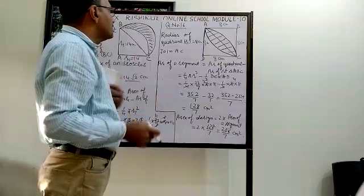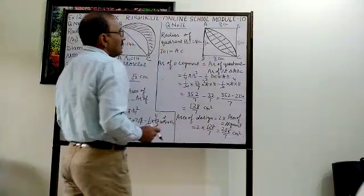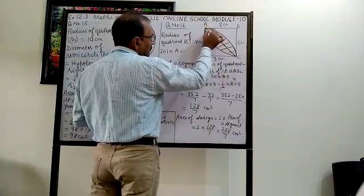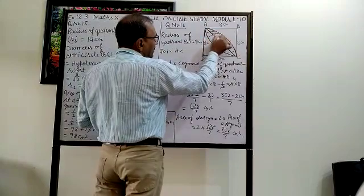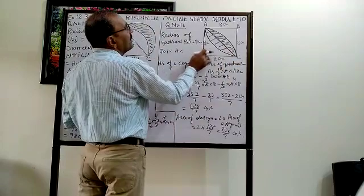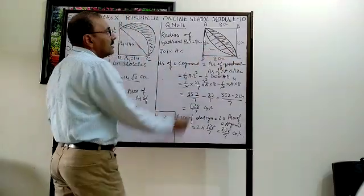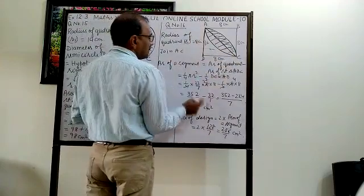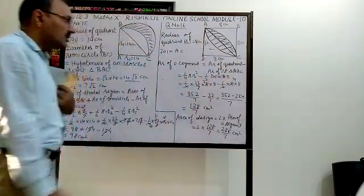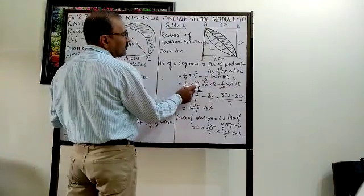The radius of each quadrant is 8 cm. First of all, join AC. Then find the area of one segment. Area of segment = area of quadrant − area of right triangle ADC. That is: ¼ × π × r² − ½ × base × height, with r = 8.